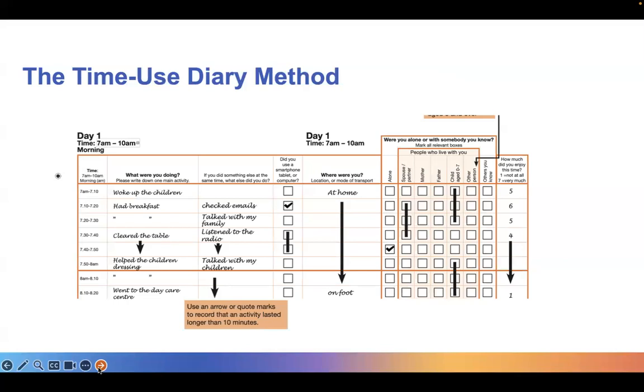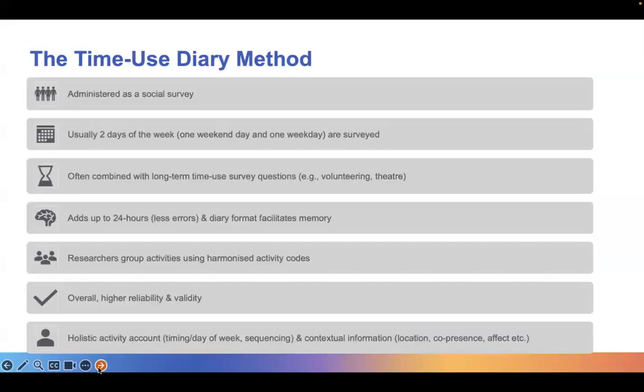This time diary instrument covers 24 hours of a given day. It essentially covers the full day. So, this instrument is administered as a social survey, which means that there are actual individual or family level questionnaires that accompany this diary, so that researchers can conduct meaningful analysis of the trends and the behaviors they observe in the diary.